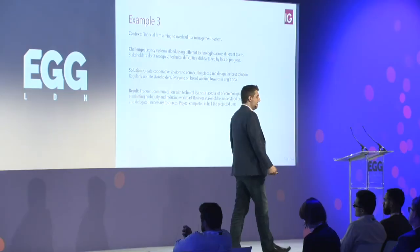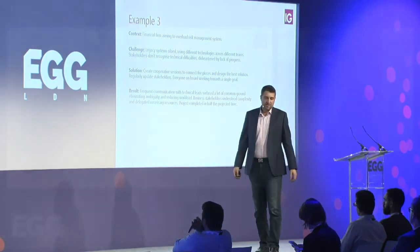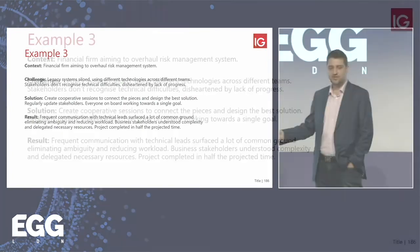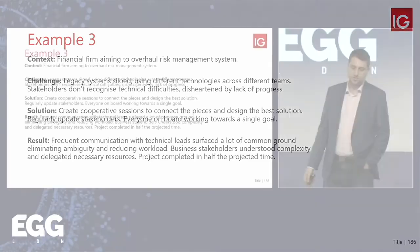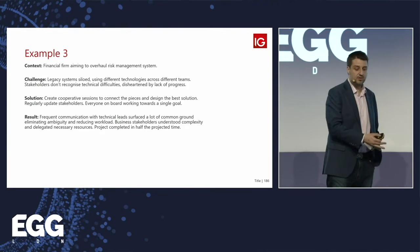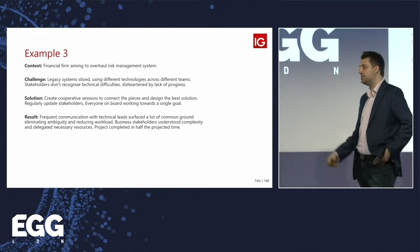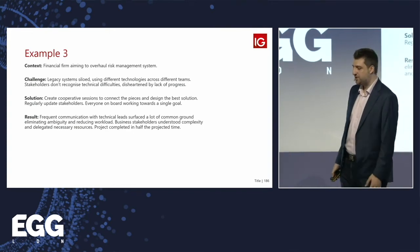Second example: a marketing firm wanted to build a knowledge graph with every customer touchpoint in order to build a next-action recommendation system. The challenge was too many resources needed and value not clearly defined. The solution was to restructure the project with specific use cases attached to a dollar sign — showing uplift against cost. Once stakeholders saw the money, they were much more eager to discuss it, and the project was delivered with a significant revenue increase. Third example: a financial firm trying to overhaul its entire risk management system — typically legacy, siloed across teams using different technologies. The solution was simply to talk to people, create cooperative sessions, bring everyone on board, and connect the dots toward a single goal. The result: people found that a lot of planned work had already been done elsewhere, and they brought it all together in half the projected time.